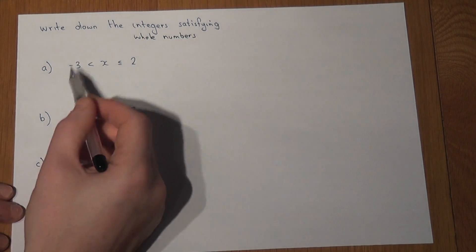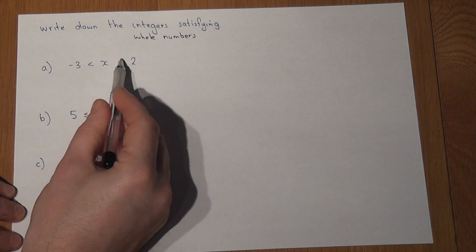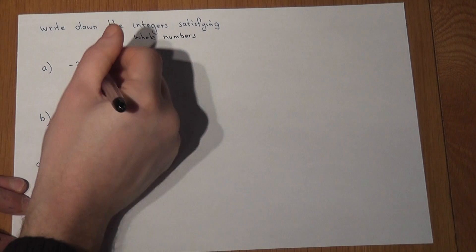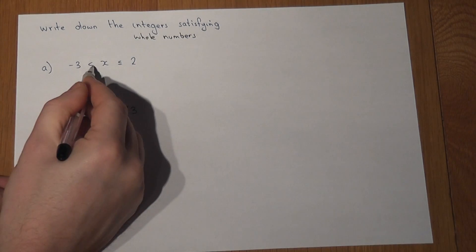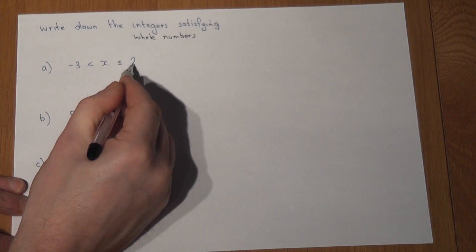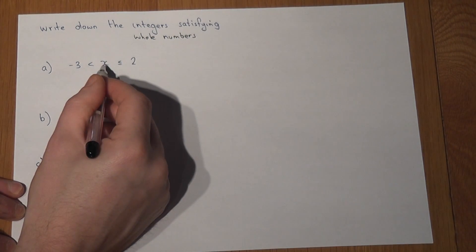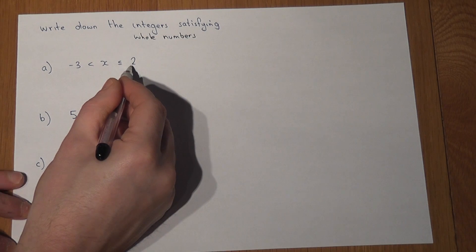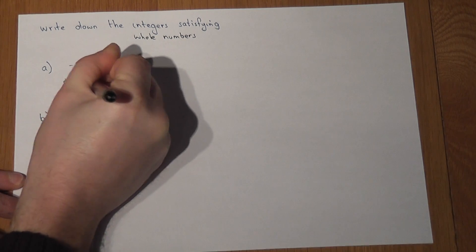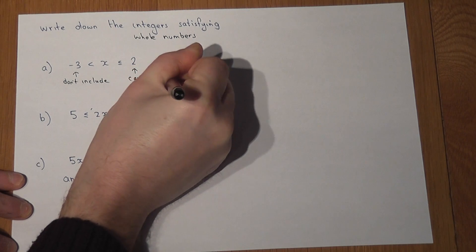In the first example we have minus three is less than x is less than or equal to two. This strict inequality means don't include the number, while this one means we can actually include the number. So this is saying: write down all whole numbers between minus three and two, where we can't include the minus three but we can include the two.